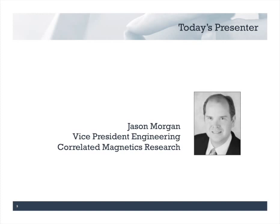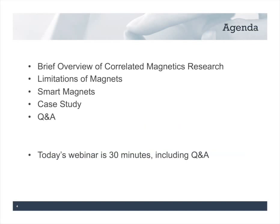I'm Jason Morgan, Vice President of Engineering for Correlated Magnetics Research, and I'll give you an introduction to designing products using polymagnets. On the agenda today is a brief overview of our company, a discussion of using magnets in product design and some of the limitations with magnets available today, what we're doing to help, and we'll leave time for some questions at the end.